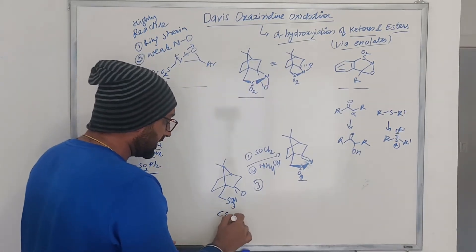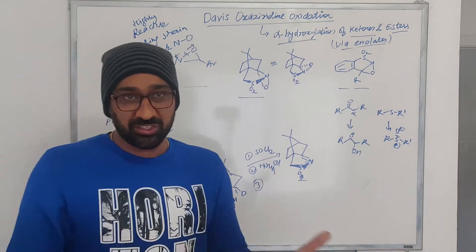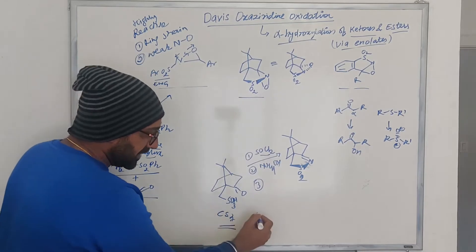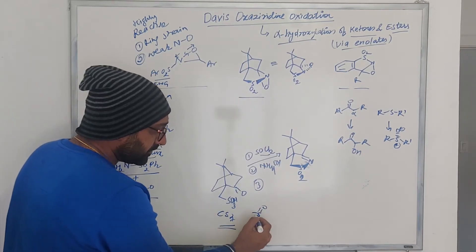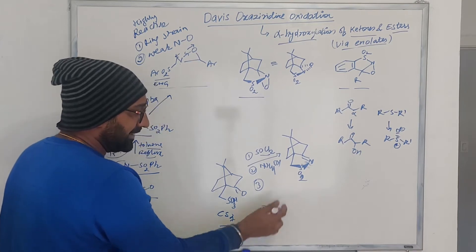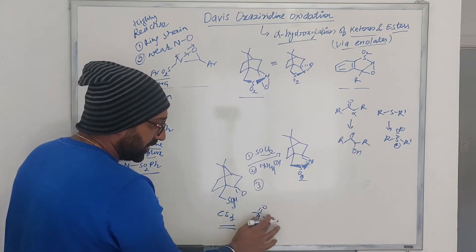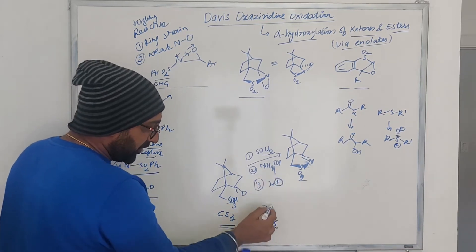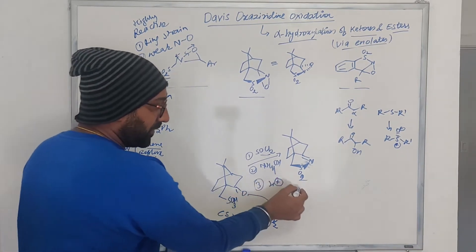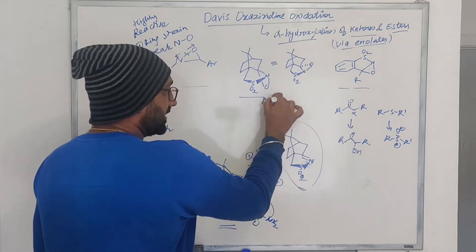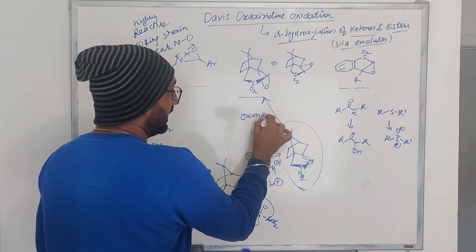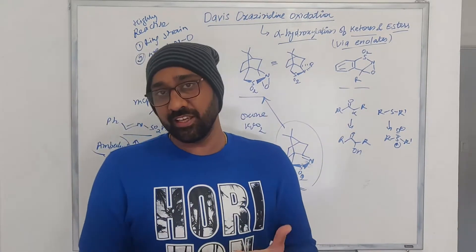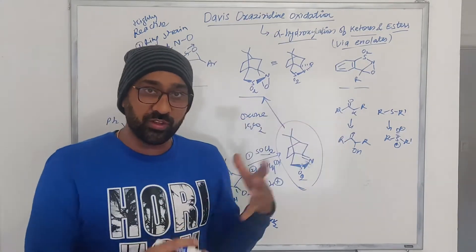Similarly, to make the other reagent, you start from camphor sulfonic acid (CSA), which is very cheap and commercially available. The first reaction is with SOCl₂, which converts your sulfonic acid into sulfonyl chloride. Then you treat with ammonium hydroxide to form the sulfonamide. Then in the presence of an acid you form the imine. The last step is epoxidation, which can be done using oxone — and do not confuse oxone with ozone, as oxone is simply an oxidizing agent.